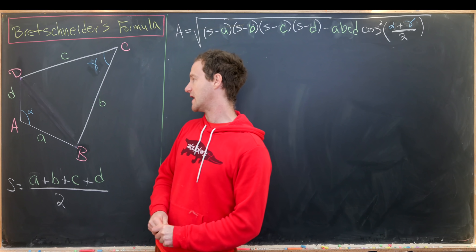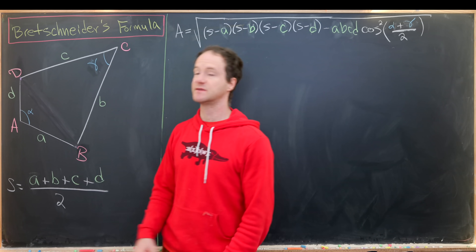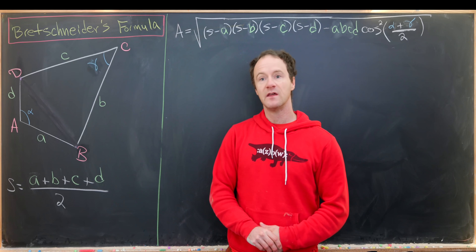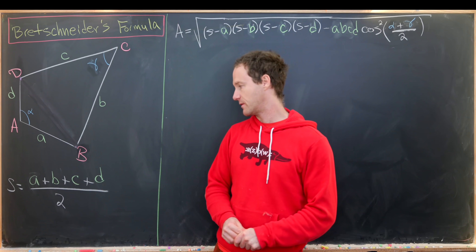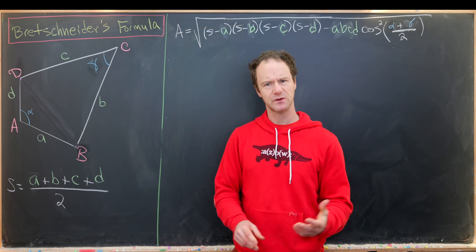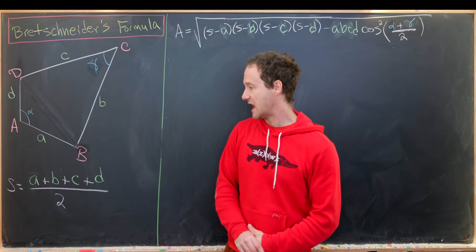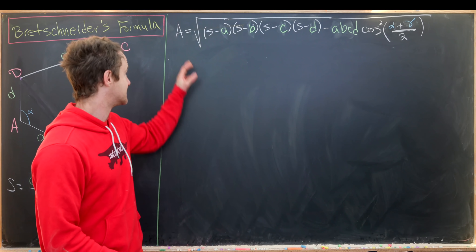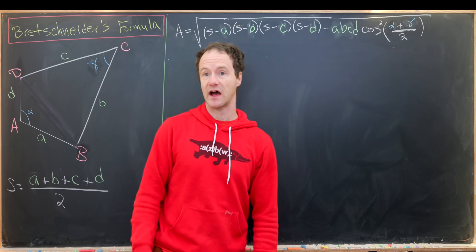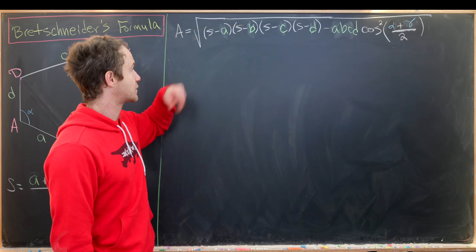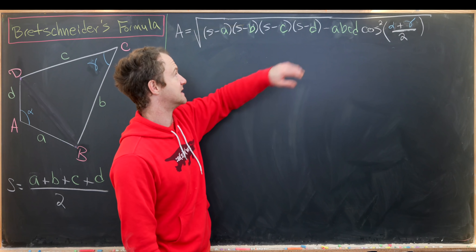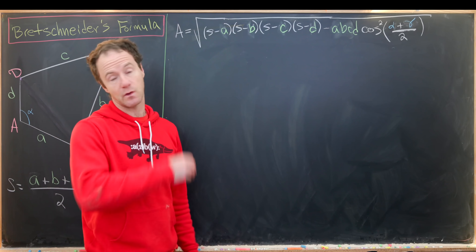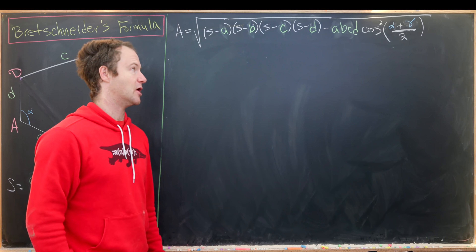Furthermore, I've labeled two angles. This angle here has measurement alpha, and this angle here has measurement gamma. Then we define the semi-perimeter, which is half the perimeter — aptly named. We have S = (a + b + c + d) / 2. Bretschneider's formula says the area equals the square root of (S−a)(S−b)(S−c)(S−d) minus abcd·cos²((alpha + gamma)/2).